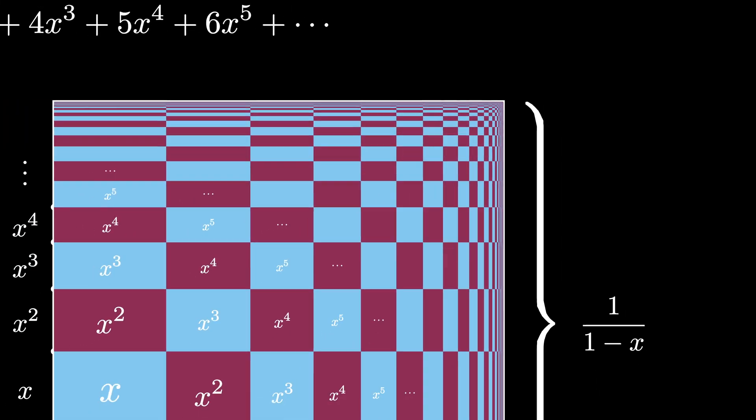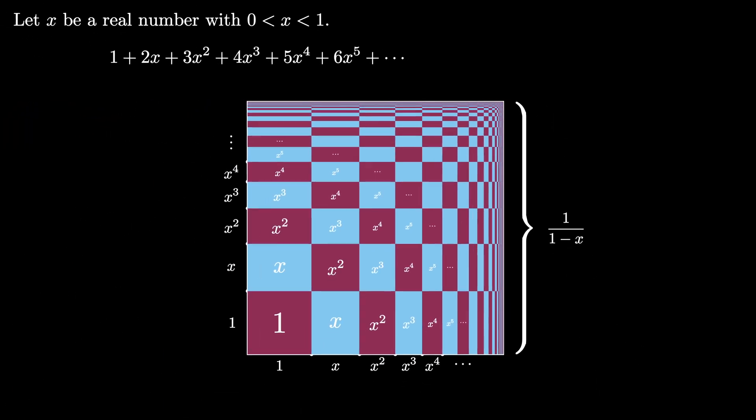That means that the infinite sum that we're thinking about must equal the area of the square. But the area of this square can be computed just by taking the product of the two side lengths, which are both 1 over 1 minus x.